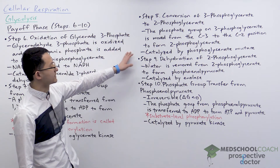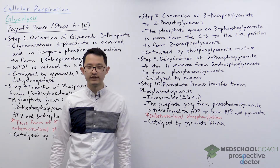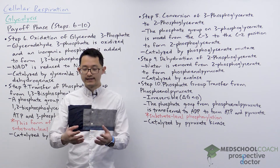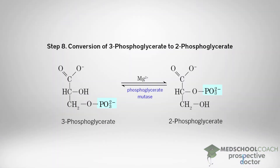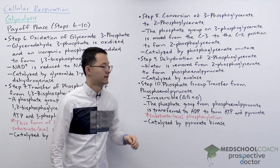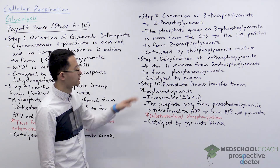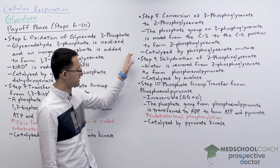Step eight is the conversion of 3-phosphoglycerate to 2-phosphoglycerate. The phosphate group on the C3 position of 3-phosphoglycerate is moved to the C2 position, resulting in 2-phosphoglycerate. This reaction is catalyzed by phosphoglycerate mutase.